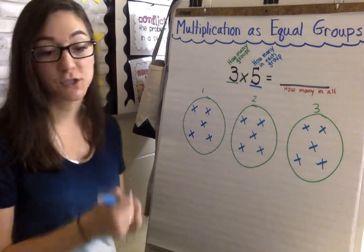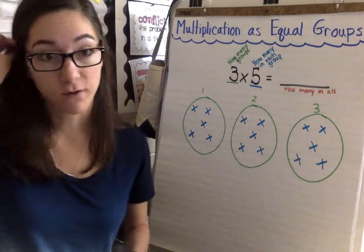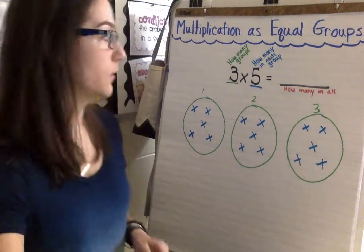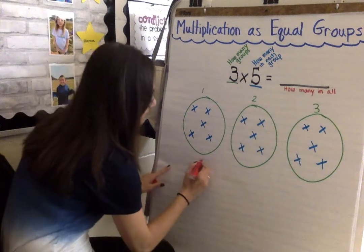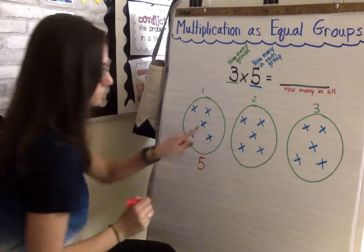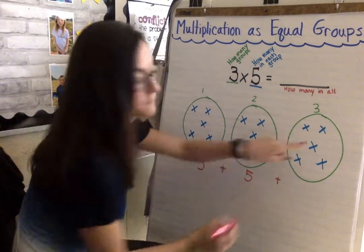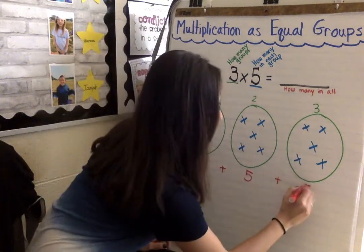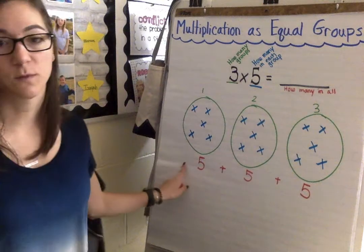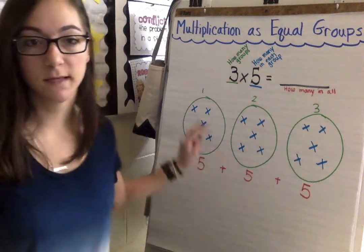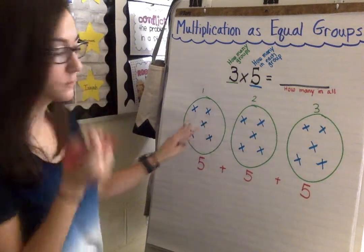Okay now I can just count to find out how many I have in all. So if I know I have five in this one, I have another five in this one, and I have another five in my last group. So that's what the repeated addition sentence would look like for our picture of equal groups.